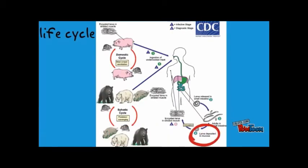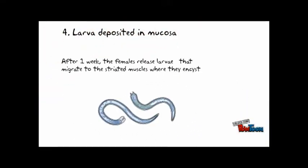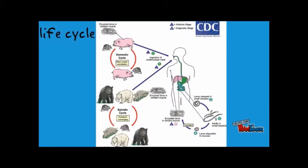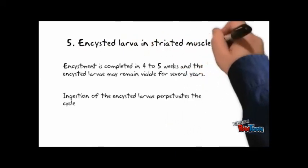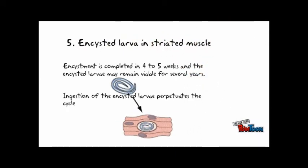Fourth, larvae are deposited in the mucosa. After one week, the female releases larvae that migrate to the striated muscle where they encyst. Fifth, encystment is completed in four to five weeks, and the encysted larvae may remain viable for several years. Ingestion of the encysted larvae perpetuates the cycle.